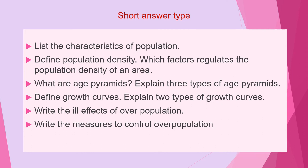Next question is: define growth curves and explain two types of growth curves. Next question is: write the ill effects of overpopulation. And the last question of this category is: write the measures to control overpopulation.